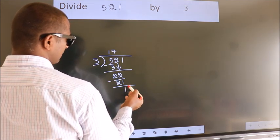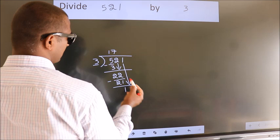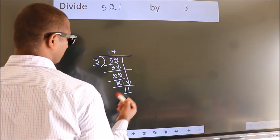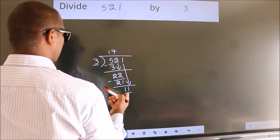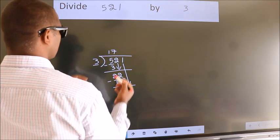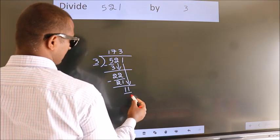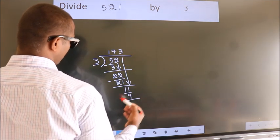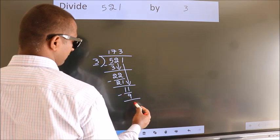After this, bring down the beside number. So, 1 down. So, 11. A number close to 11 in the 3 table is 3 times 3 equals 9. Now, we subtract. We get 2.